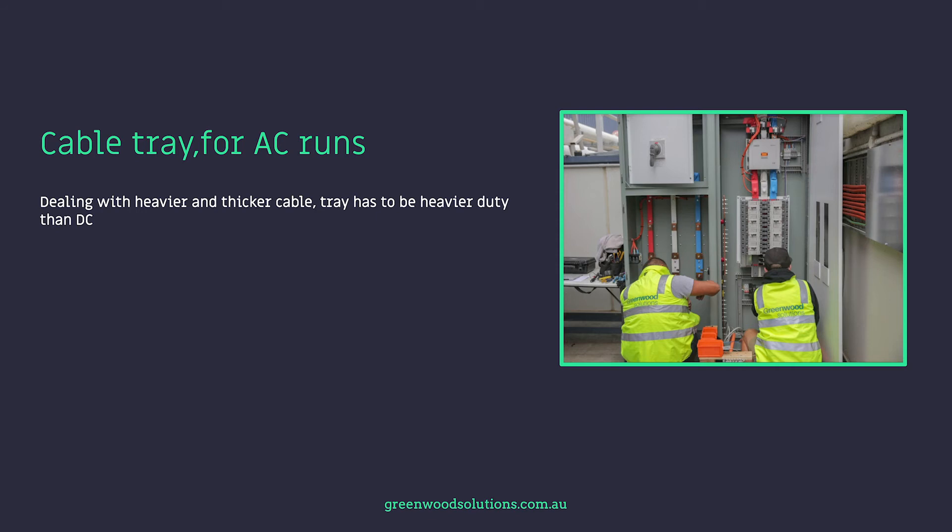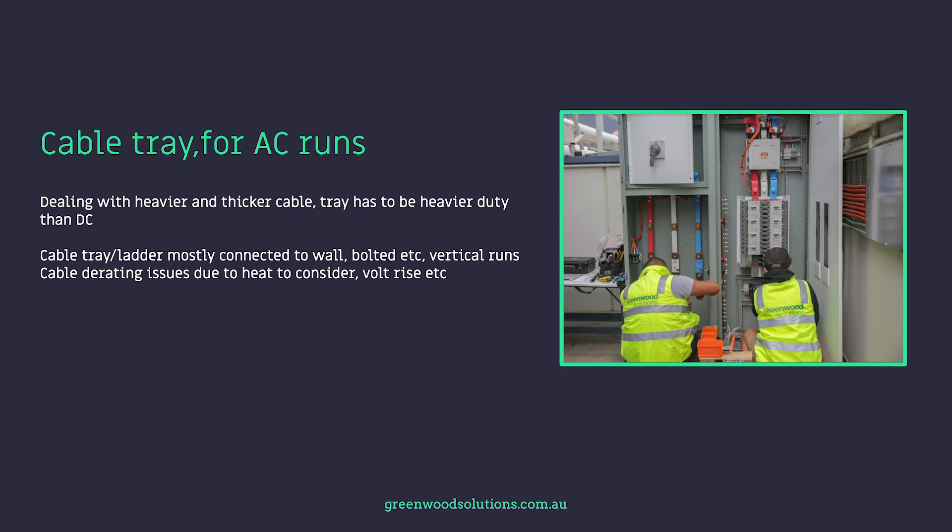For AC runs, AC cable is considerably heavier than DC, especially in larger sizes of XLPE — it's a lot of weight and really difficult to handle. You're going to be using ladder in most cases, both in vertical and horizontal runs. Because the cable is so heavy and you may be running up or down a wall, think about the derating of the cable. Consider whether you're using existing cable tray and think about the spacing between the cables themselves when running multiple cables.